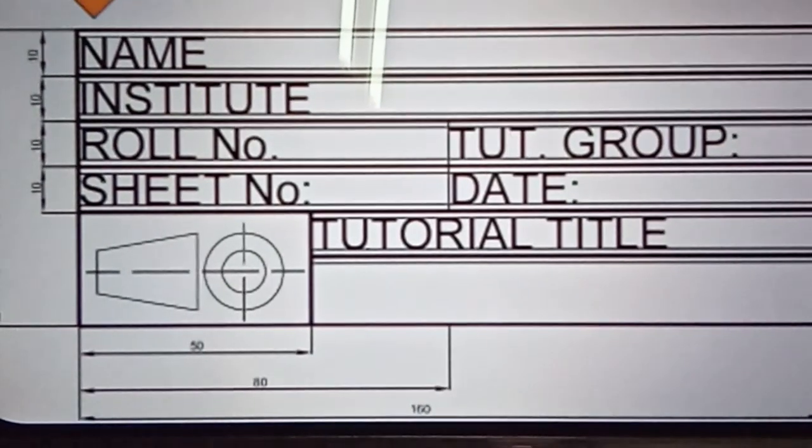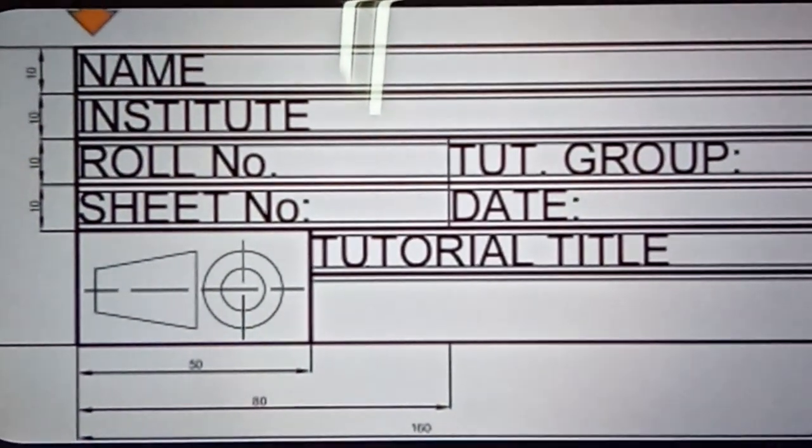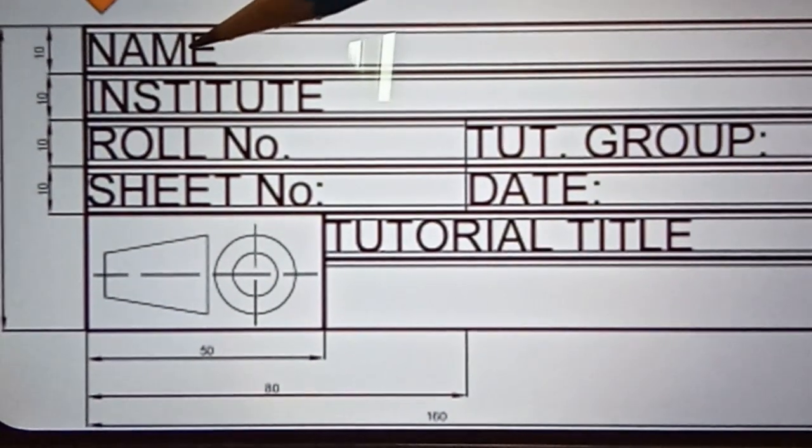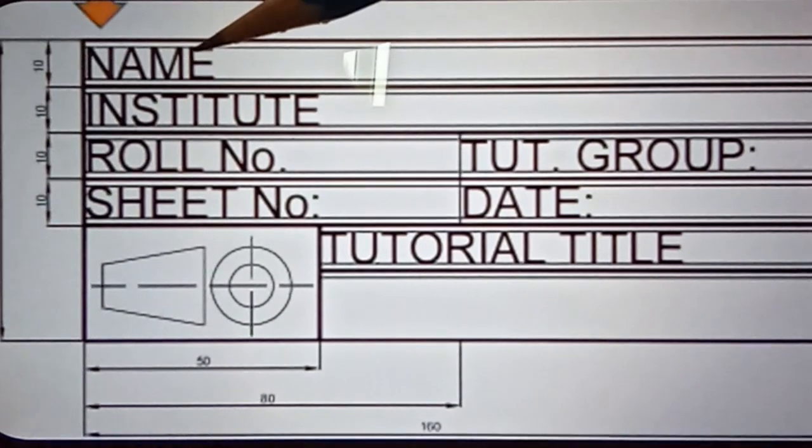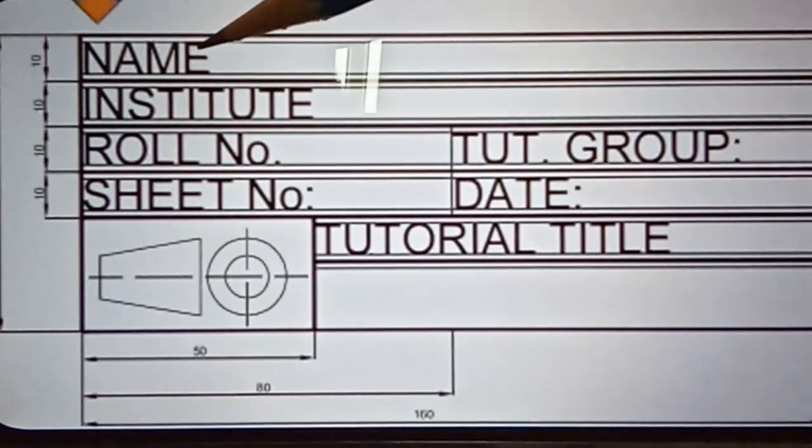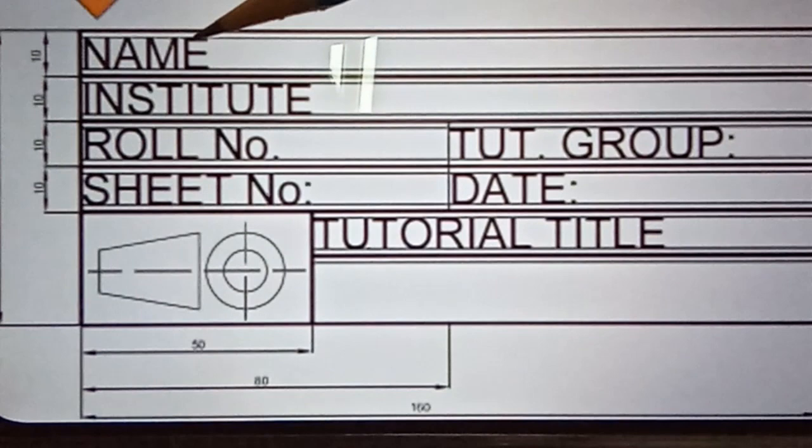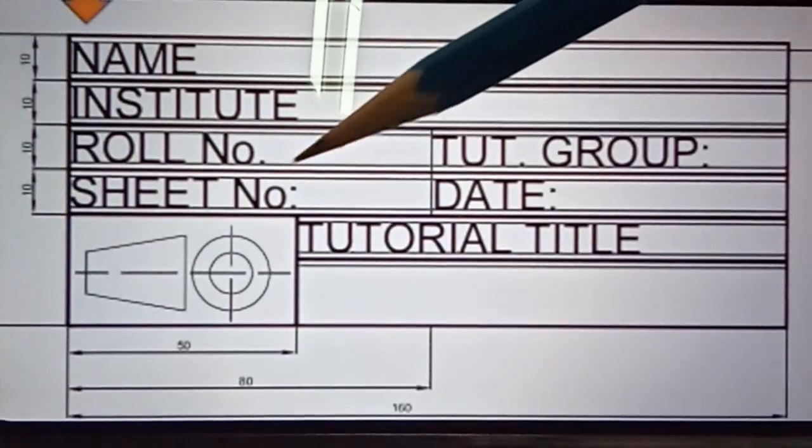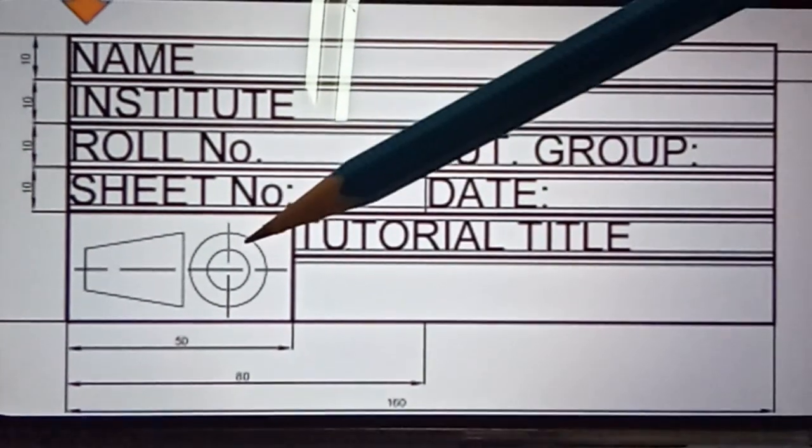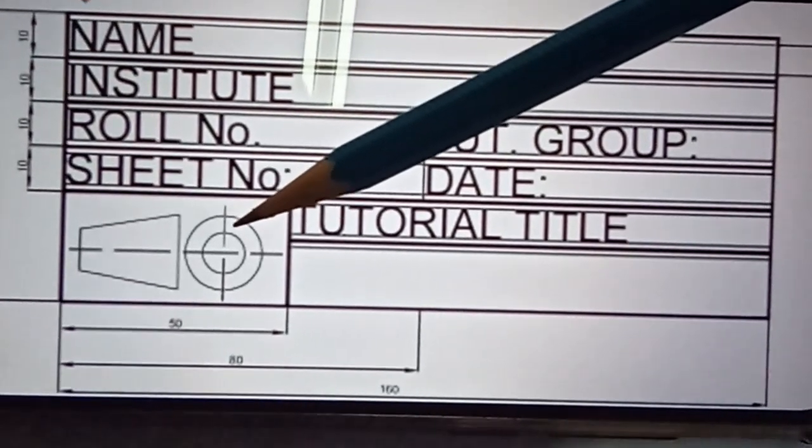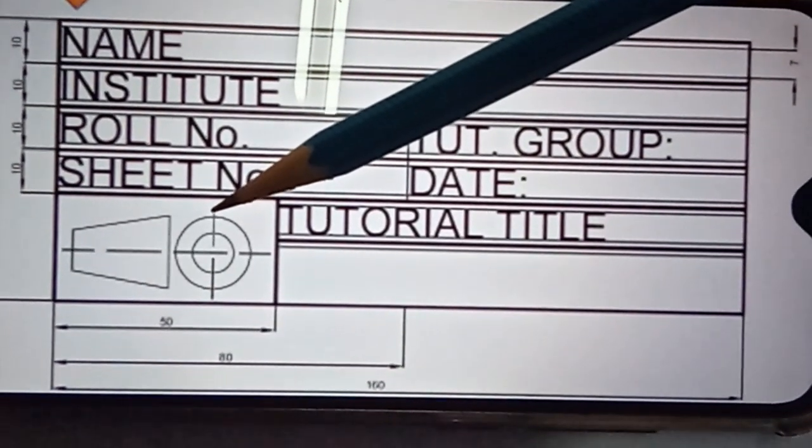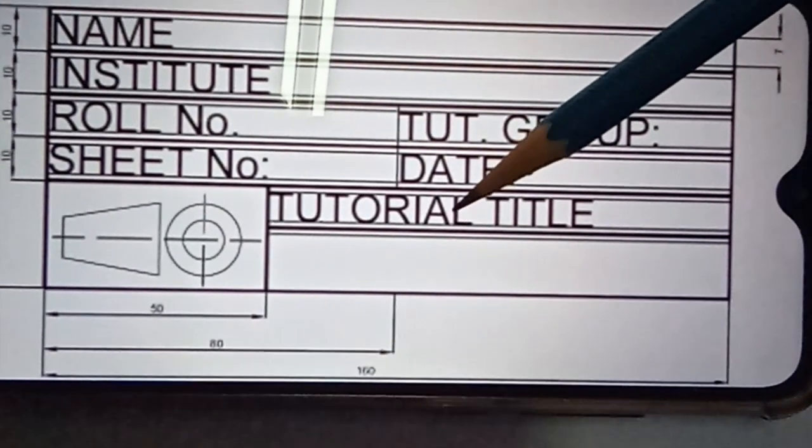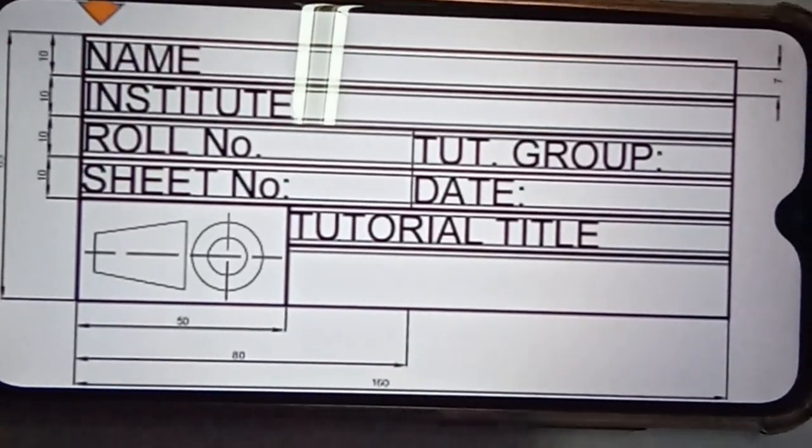Finally, you will get your title block to be like this, where you have your 10mm section everywhere. Here you will have your name written according to the strokes mentioned in engineering drawing. Name, here comes your institute, then your roll number, sheet number, tutorial group, date. This is first angle projection symbol. It differs if you are going to make third angle projection. And here tutorial title. This is all about your title block. Thank you.